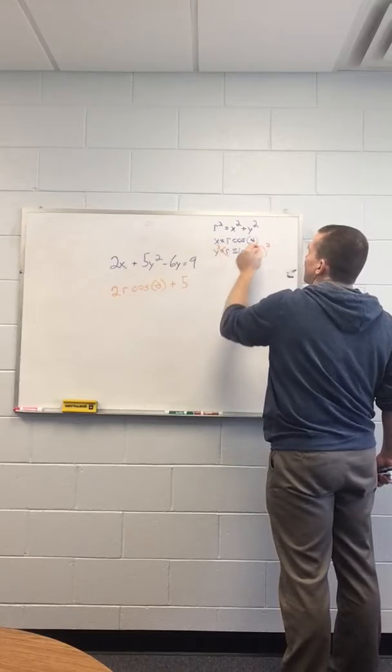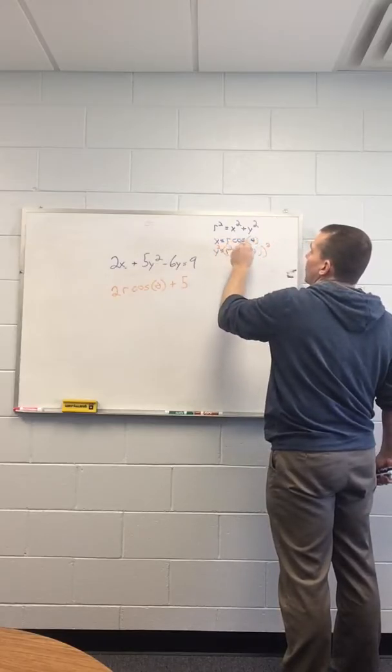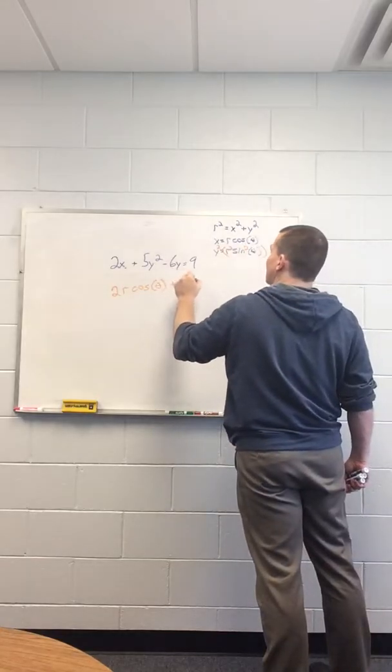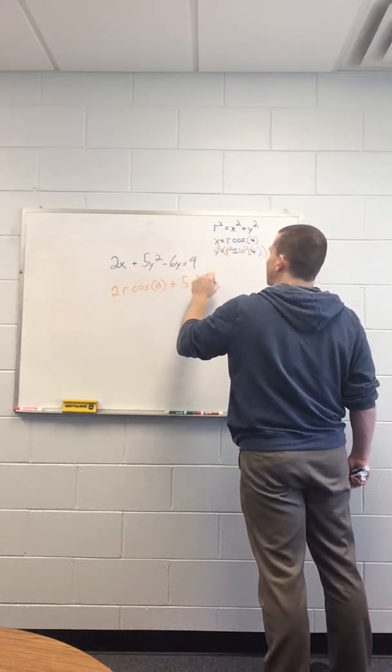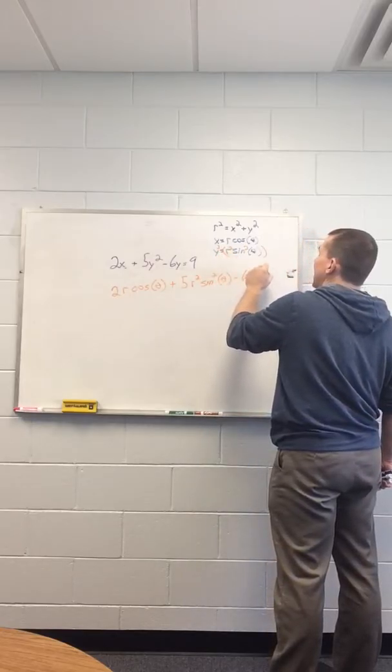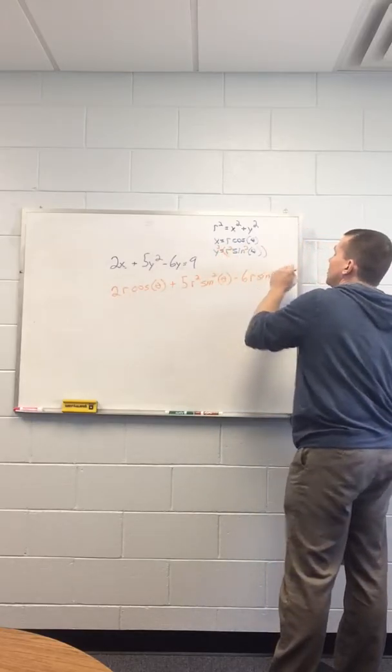Y is R sine theta. So Y squared is R sine theta squared, which squares both terms. You have to distribute that in. So it becomes 5R squared sine squared theta minus 6 times Y, which is just R sine theta, equals 9.